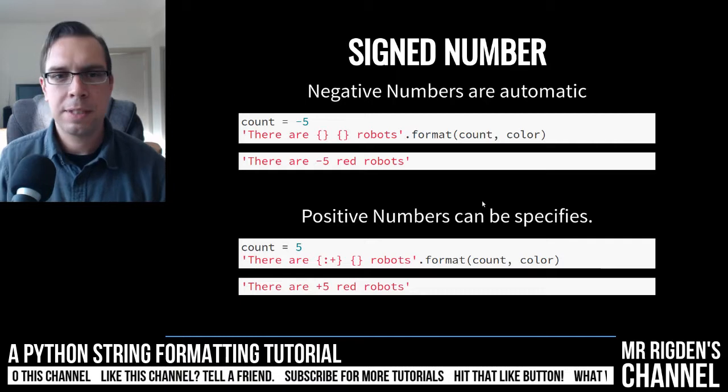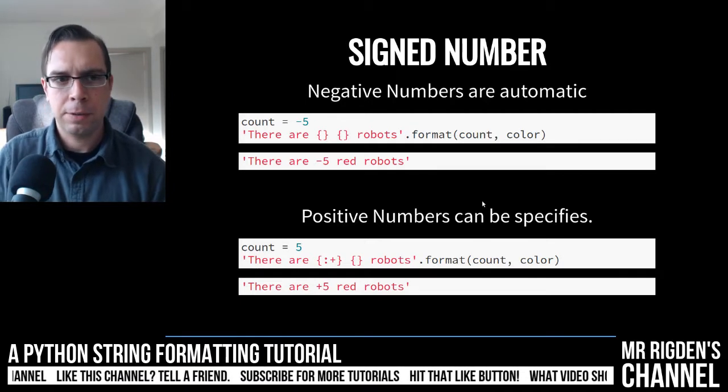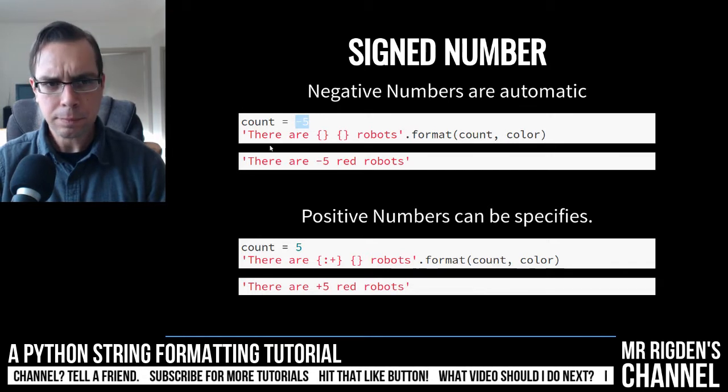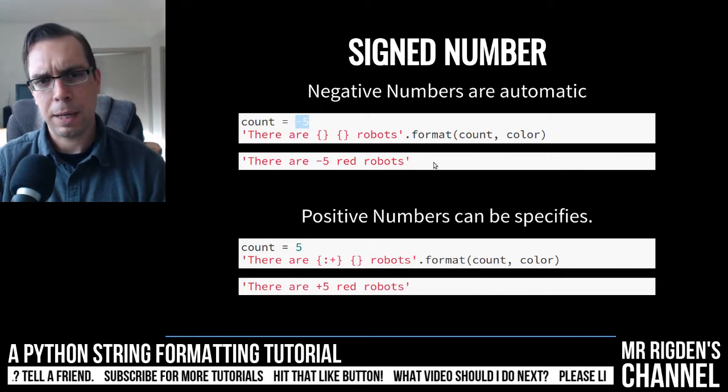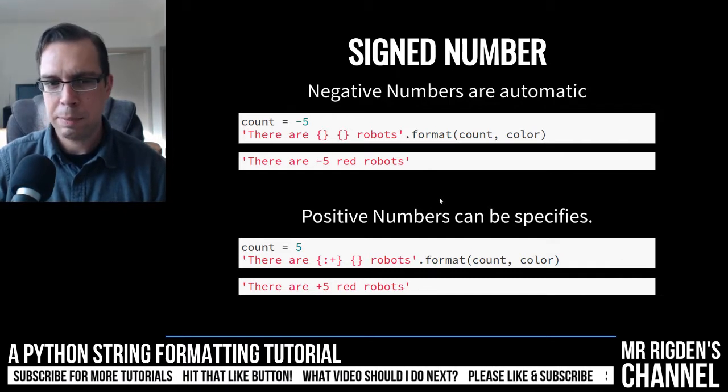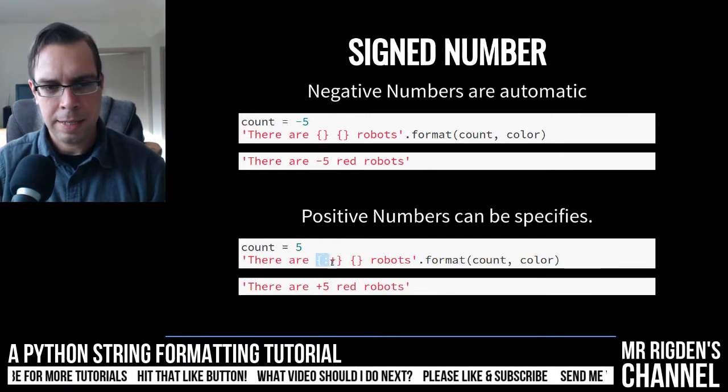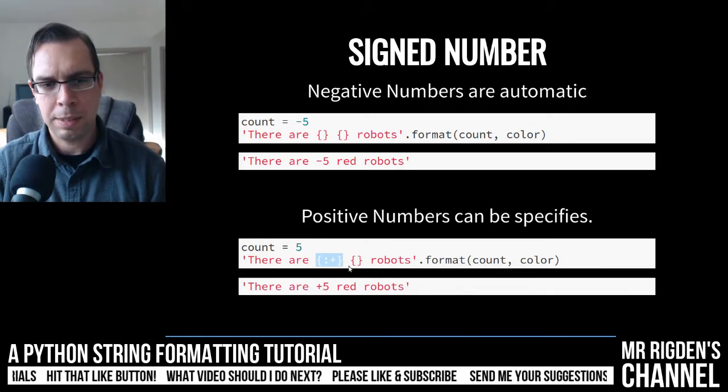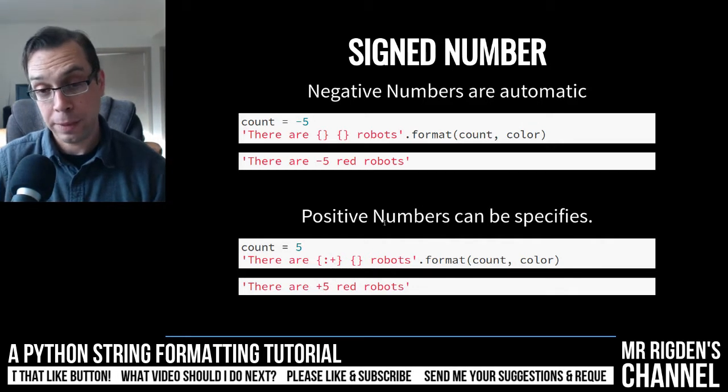Sign numbers. So negative numbers are automatic. So here we go. We've got a count of negative five and there are negative five robots. Positive numbers are not automatic, but we can specify them. As you see here inside the little brackets, we're going to specify a little change where we do want it to be a positive number or show that it is a positive number.